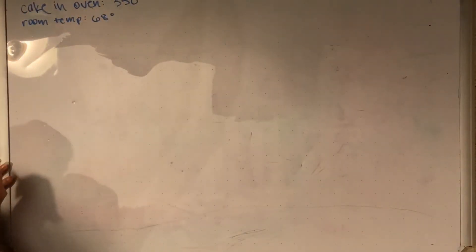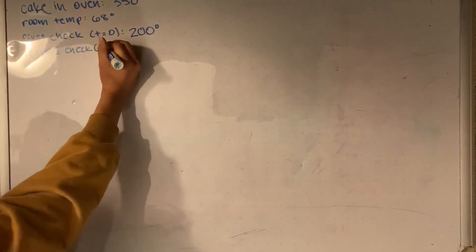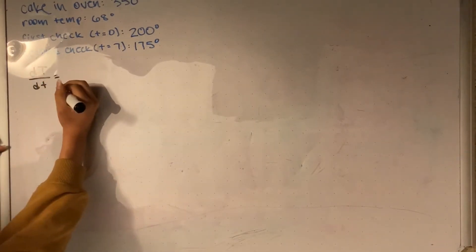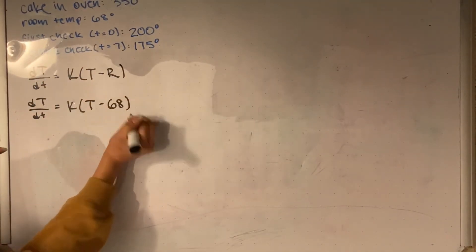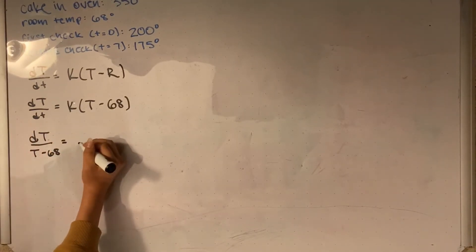Our ovens were 350 degrees, so this is the original cake temperature. The room temp is 68, the first time after taking it out was 200, and the second 175. We can start with this equation, given by Newton's law of cooling, and plug in 68 for the surrounding temperature, then divide and multiply to get the same variables on each side.